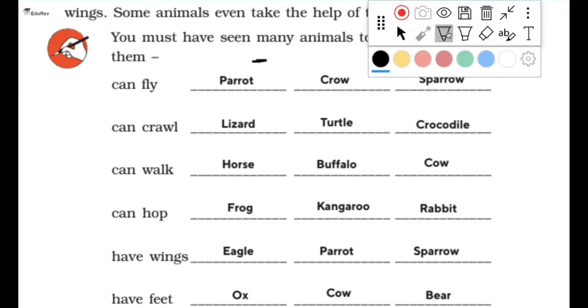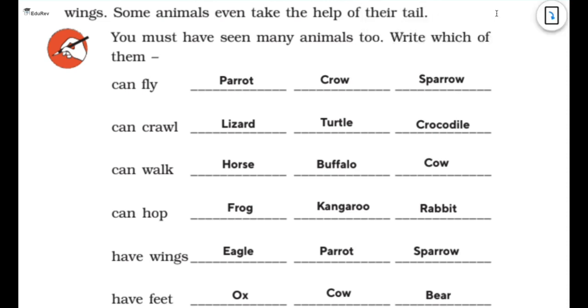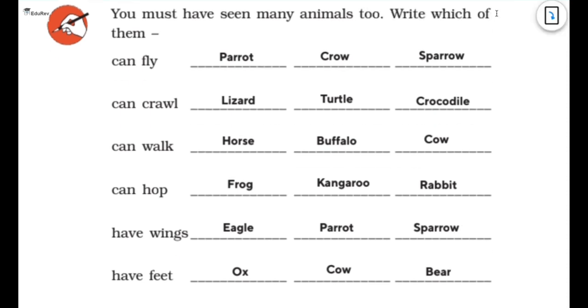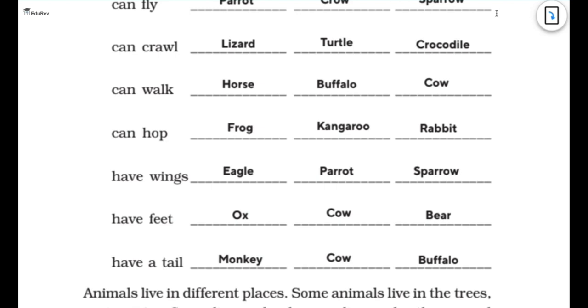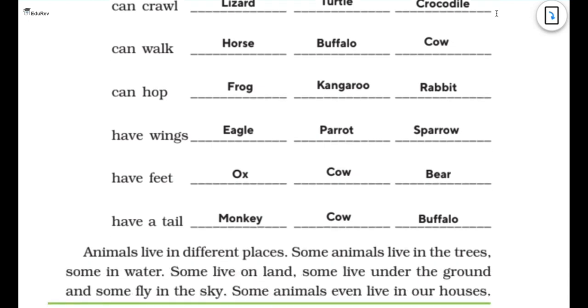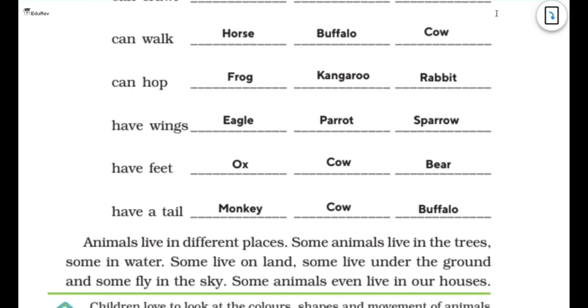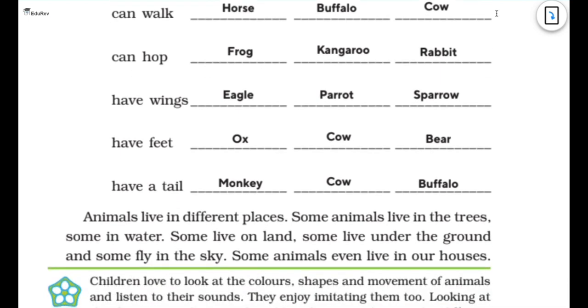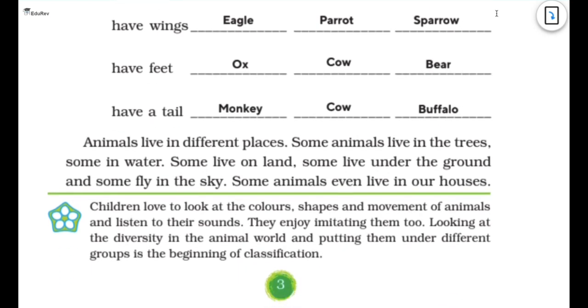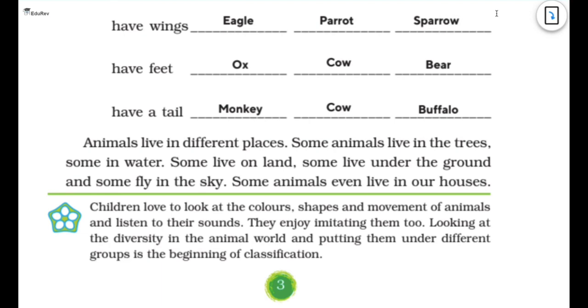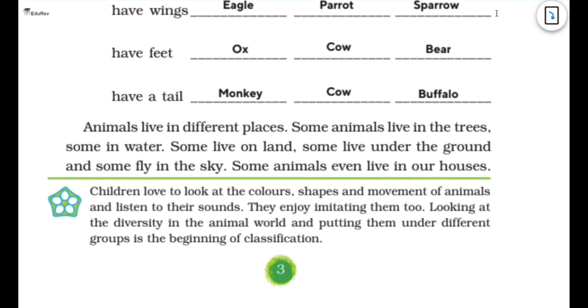But what you can actually do is you can take your inspiration from the ones I've written and you can write something else in your notebooks. So the animals which can fly are parrot, crow, sparrow. The ones which can crawl are lizard, turtle and crocodile. The ones which can walk are horse, buffalo and cow. Can hop, frog, kangaroo and rabbit. Have wings, eagle, parrot and sparrow. Have feet, ox, cow and deer and have a tail, monkey, cow and buffalo.